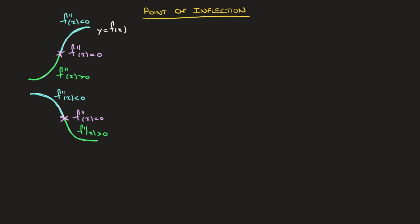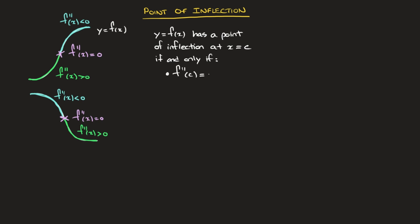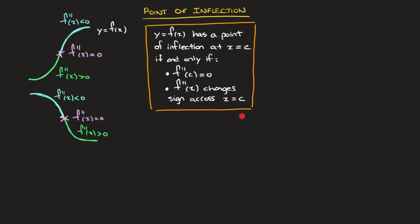For the sake of defining things properly: we say that a curve y equals f(x) has a point of inflection at x equals some number c if, and only if, two things hold. First, the second derivative at c must equal zero. Secondly, f''(x) must change sign on either side of that point — f''(x) changes sign across x equals c. This applies to functions that are continuous and whose first and second derivatives are continuous as well.